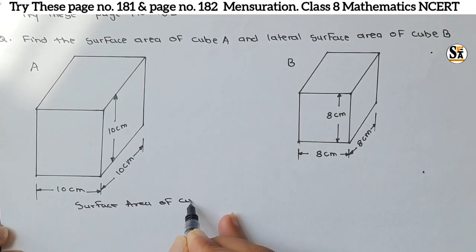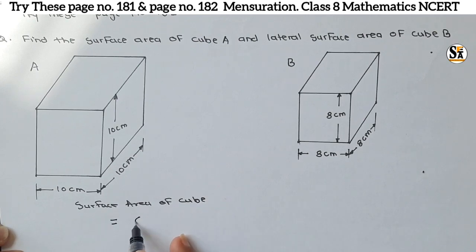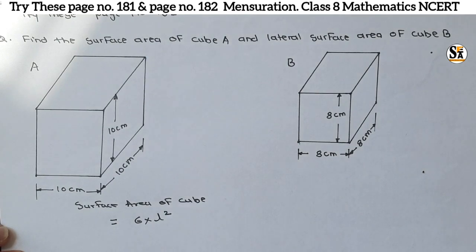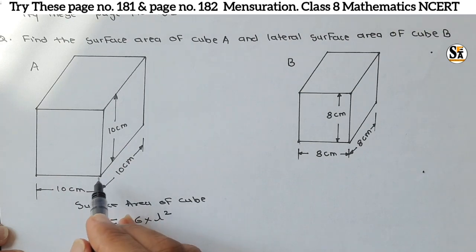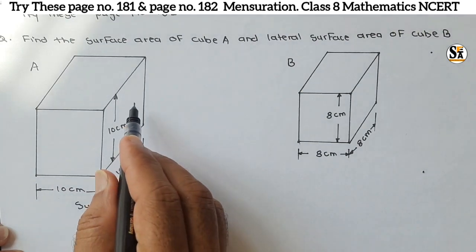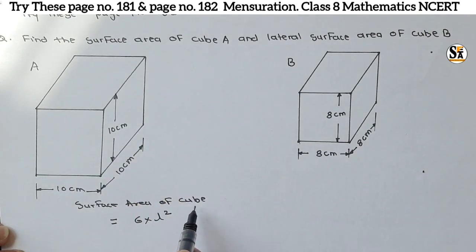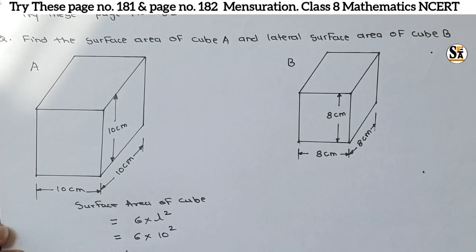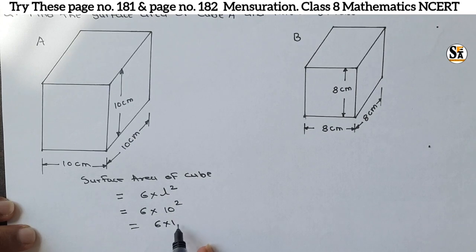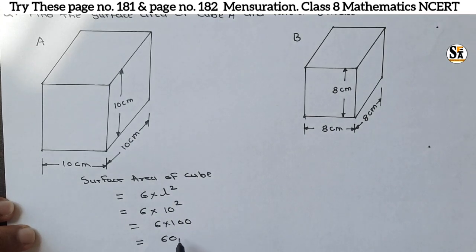The formula for surface area of a cube is 6 into l squared. Here l is 10 centimeters — length, breadth, and height are all the same in a cube, making it a special cuboid. So: 6 into 10 squared = 6 into 100 = 600 centimeters square.